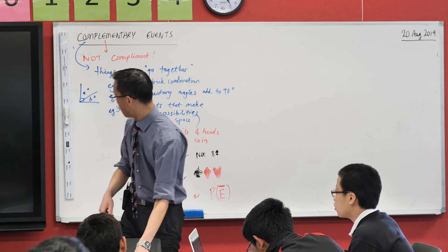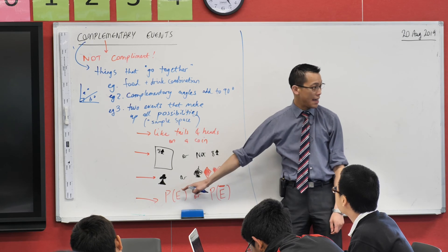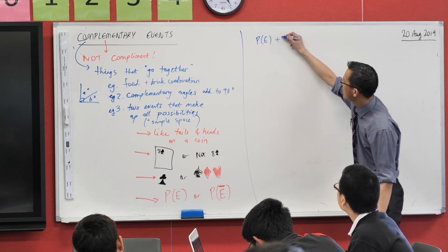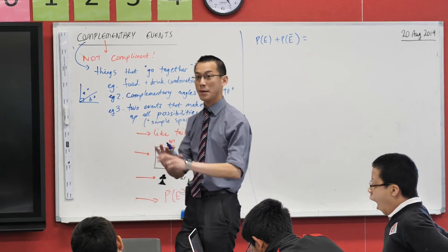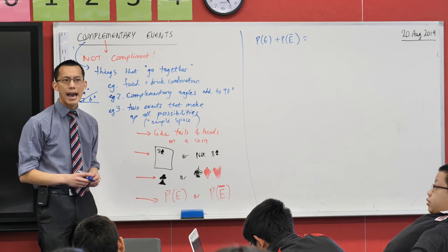Now this leads me to an important question. If you've got some event and then the opposite of that event, because these things are meant to cover every single possibility, this should be all the things, when I add those two probabilities what should they add up to?